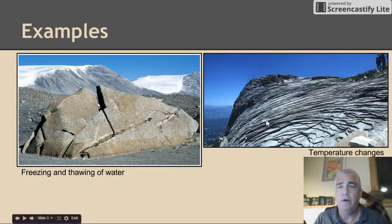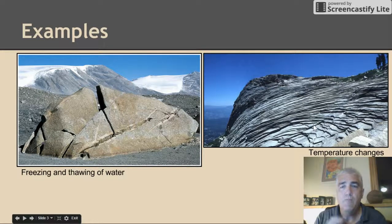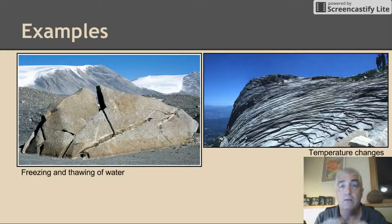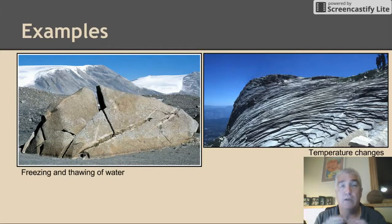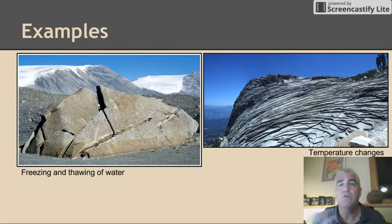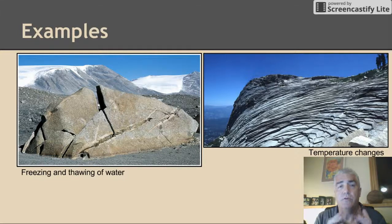Our example on the right is of temperature change. This is what I was talking about earlier — the surface of the rock is heated, it expands a little bit, and then as it cools it contracts: expands, contracts. Do this over hundreds or thousands of years and pretty soon that rock also breaks down into smaller pieces. That's weathering.